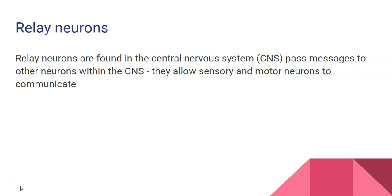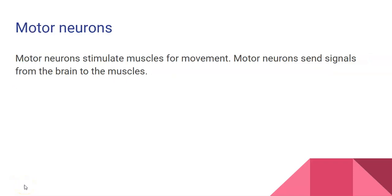Relay neurons, on the other hand, are found in your central nervous system — in your brain and your spinal cord — and these allow sensory and motor neurons to communicate with each other. Motor neurons stimulate your muscles for movement; they send signals from the brain to your muscles, telling them to work.